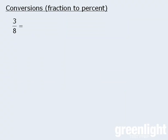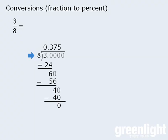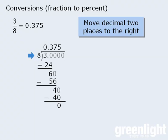Now let's learn how to convert a fraction to a percent. To convert 3 eighths to a percent, we can first convert 3 eighths to a decimal, and then convert that decimal to a percent. We convert 3 eighths to a decimal by dividing 8 into 3 — using a calculator or long division — to get 0.375. From here, we convert the decimal to a percent by moving the decimal two spaces to the right to get 37.5%. So 3 eighths is equal to 37.5%.